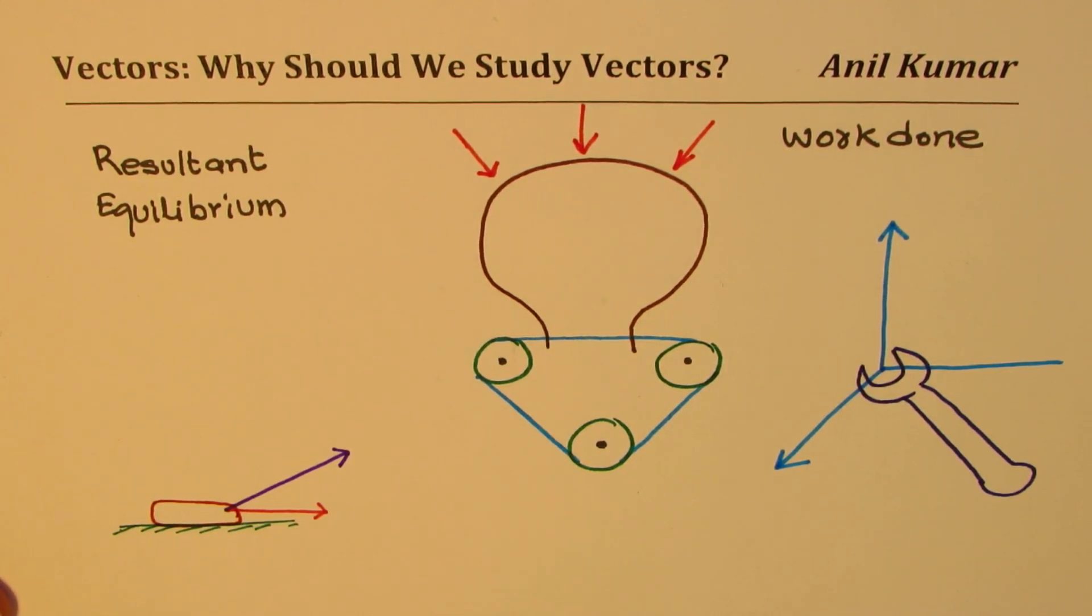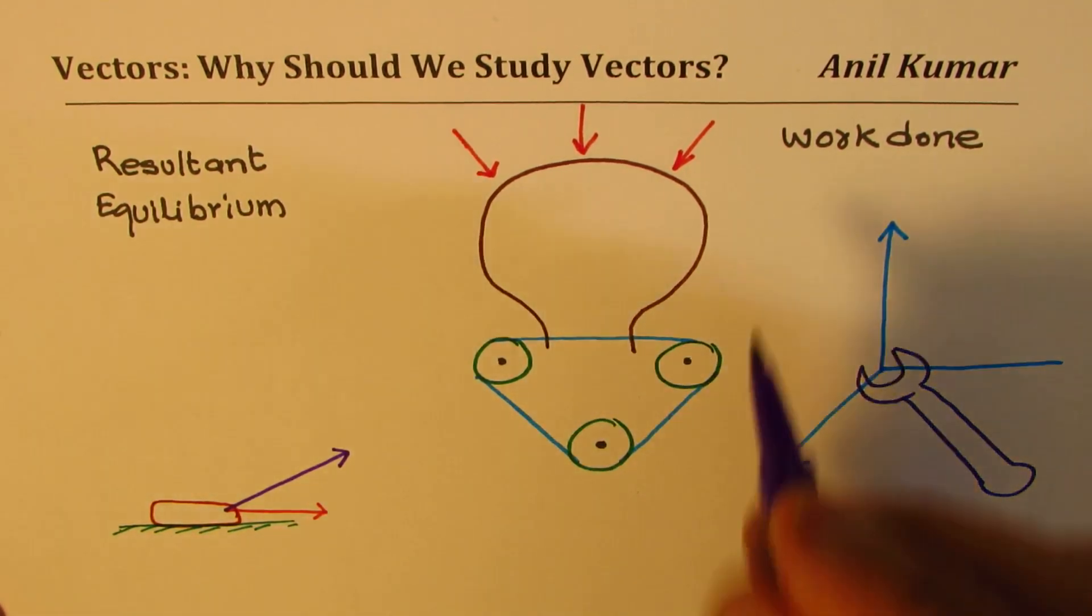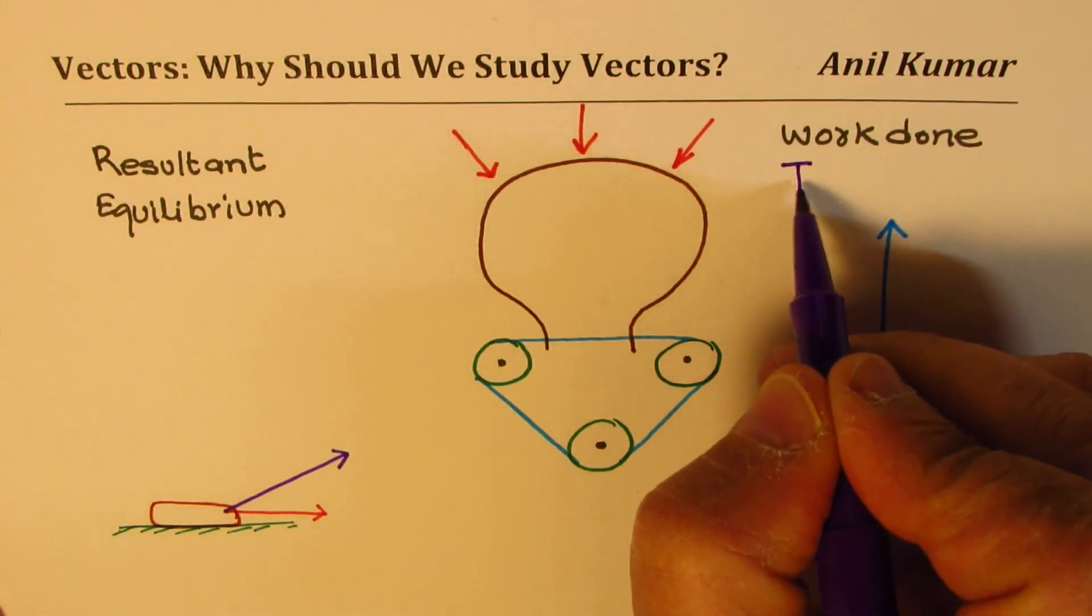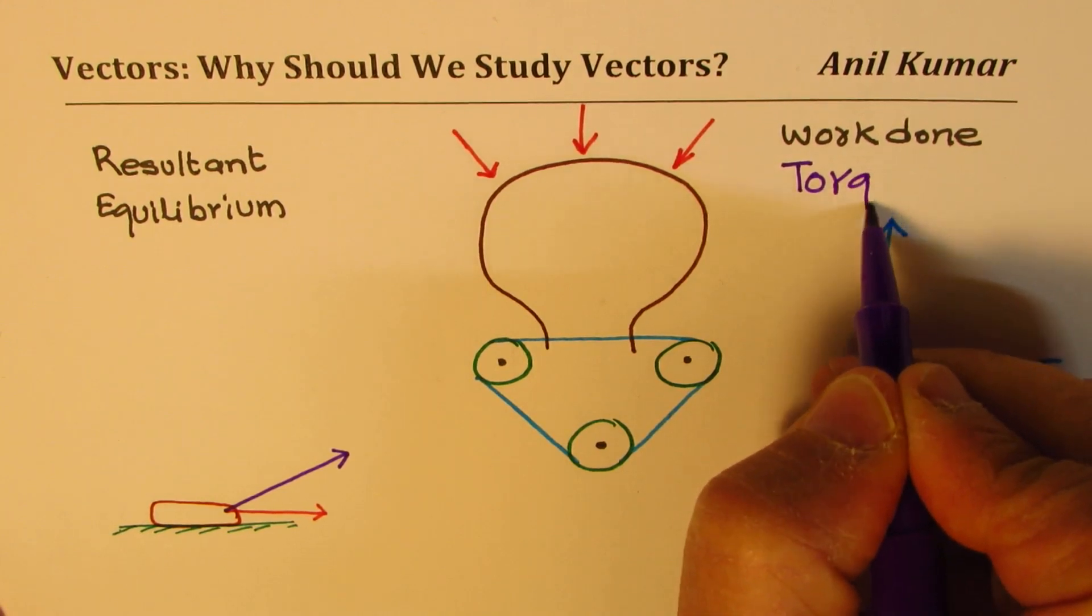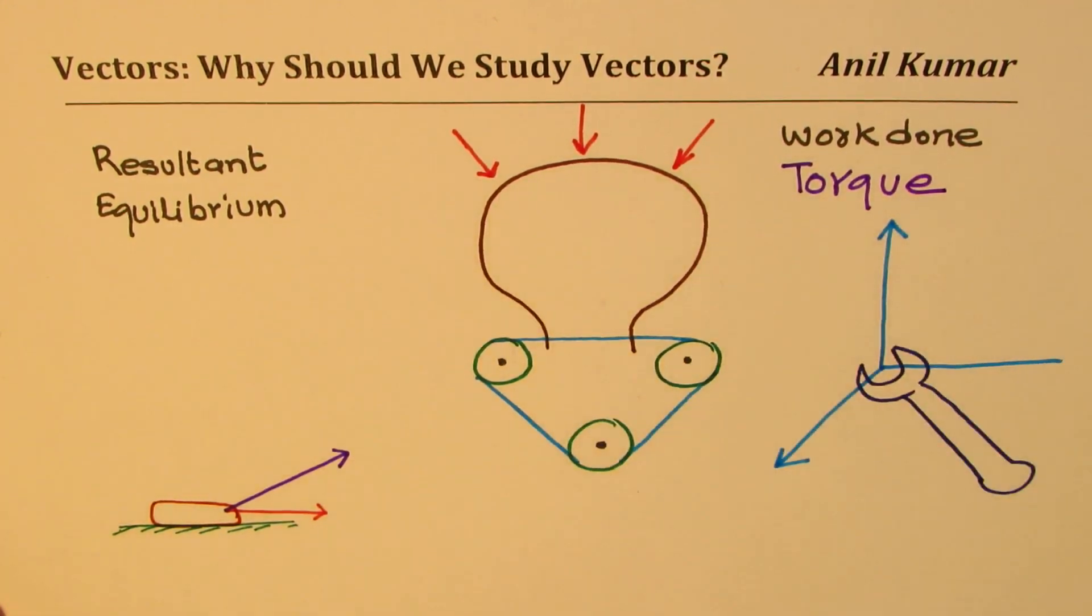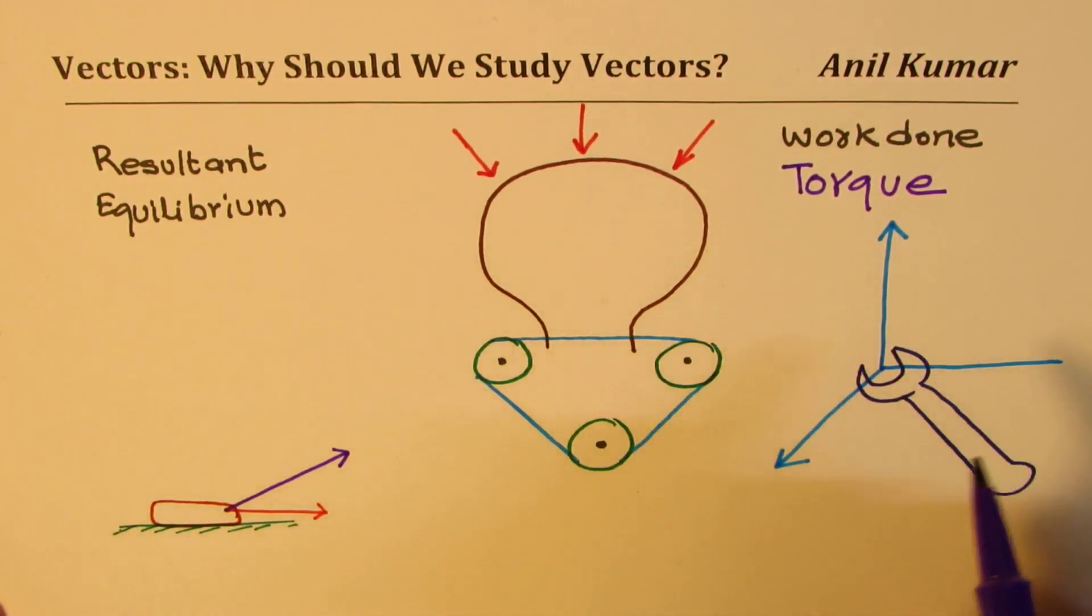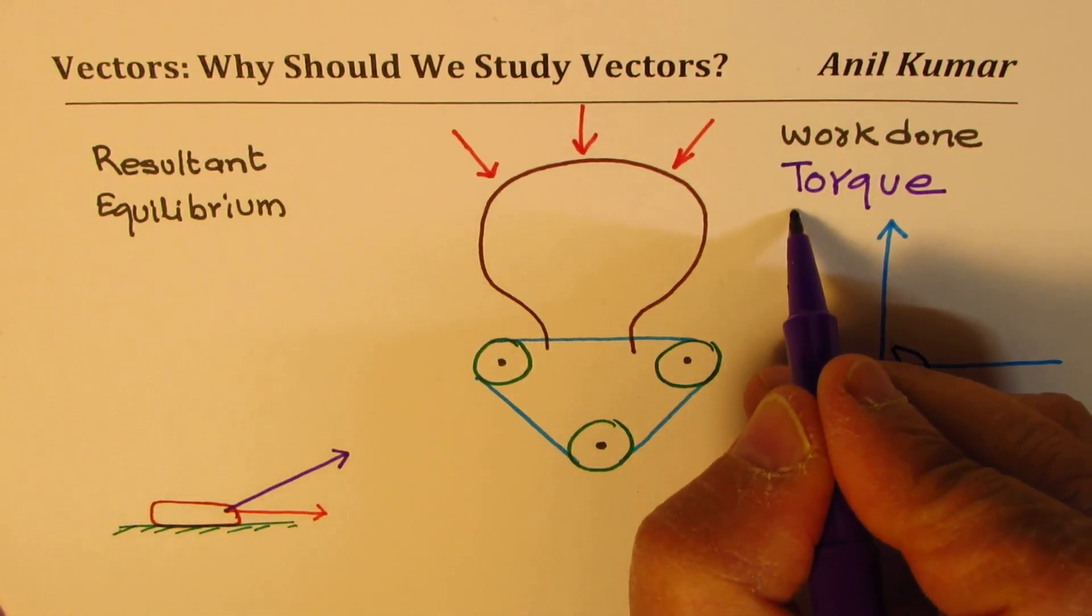So what we saw here is that we really are working and twisting ourselves, which we call as torque, and we are not able to figure out the dynamics.